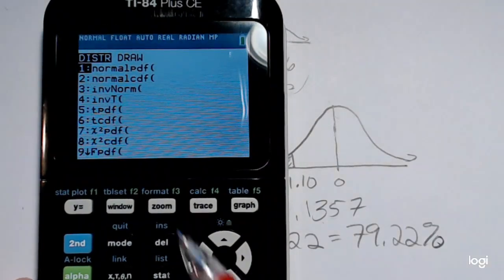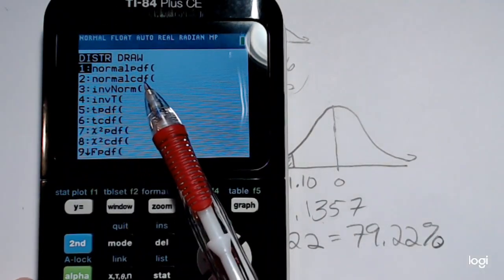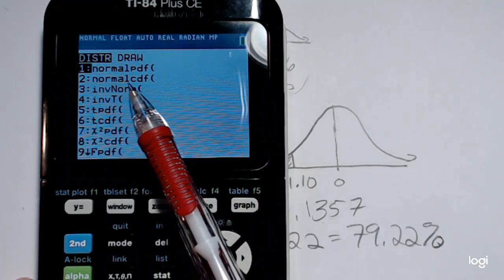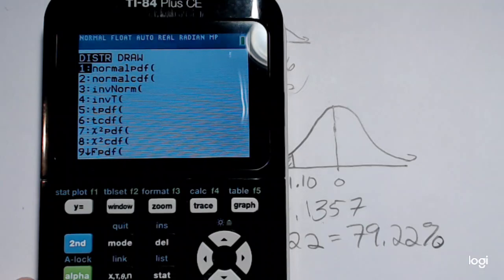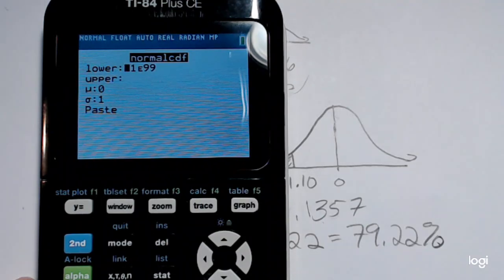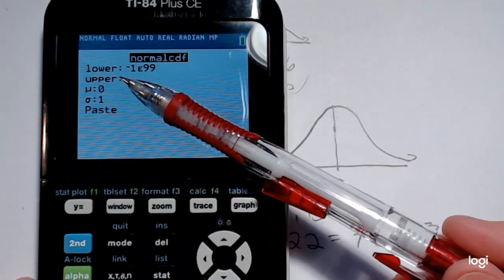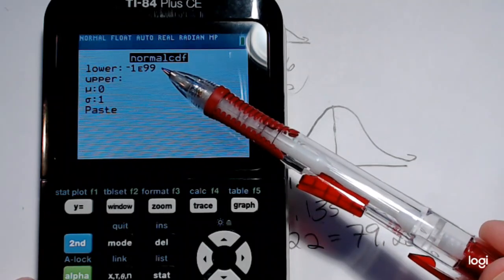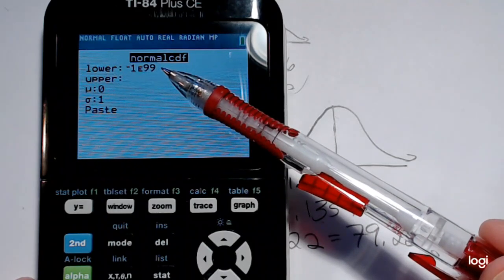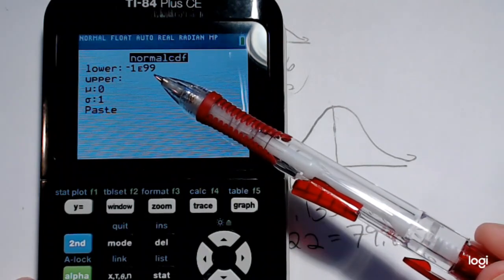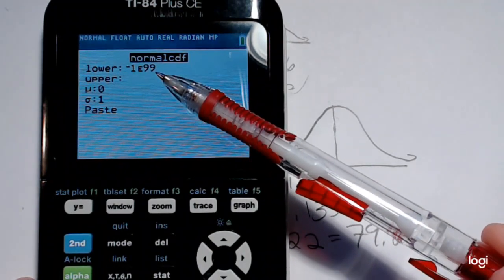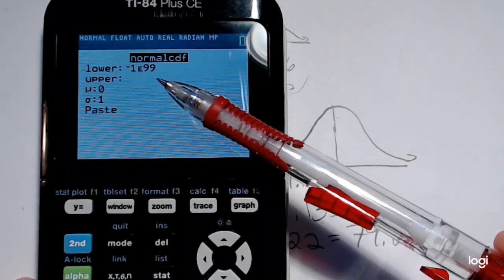And option two is normal CDF, normal cumulative distribution function. I'm going to select that. It defaults to the calculator's version of negative infinity. So just like how the table theoretically starts at negative infinity, or the curve starts at negative infinity...